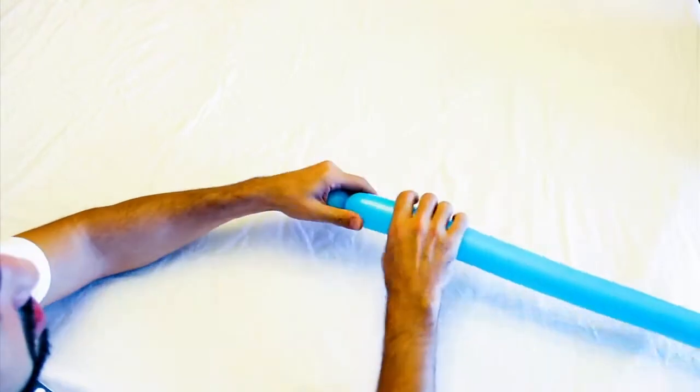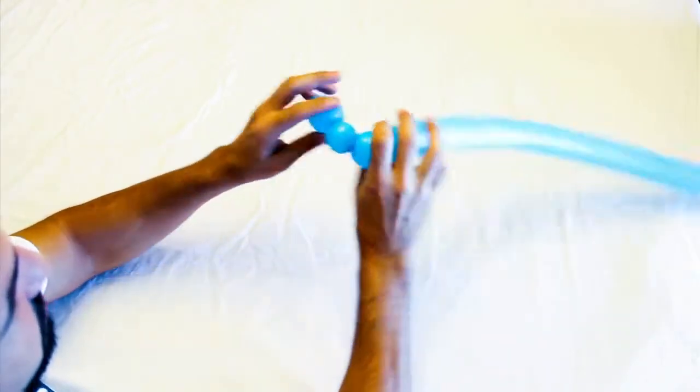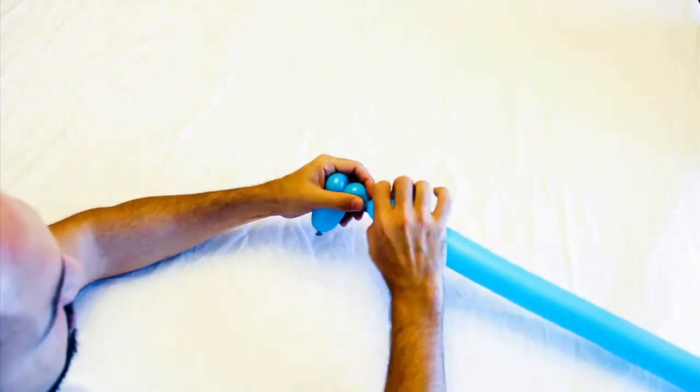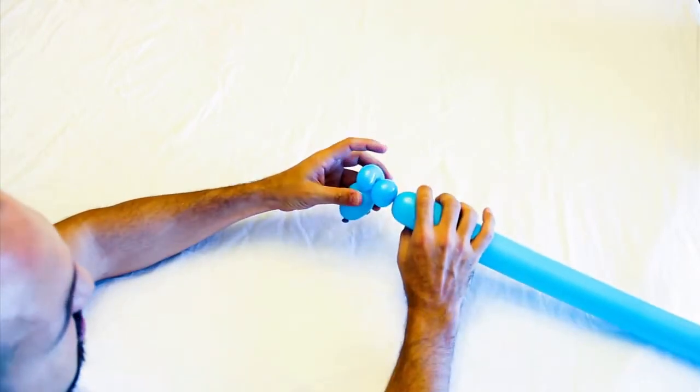Then you're going to make a good one inch bubble that we're going to use as a pinch twist. You're going to make a second pinch twist right after that, and this is the hardest twist on this particular shape.